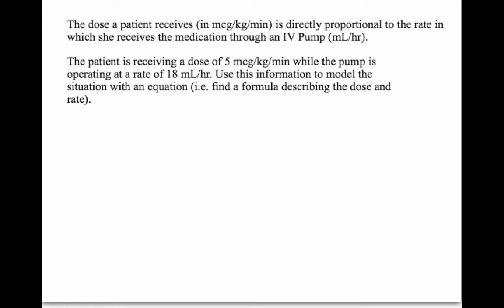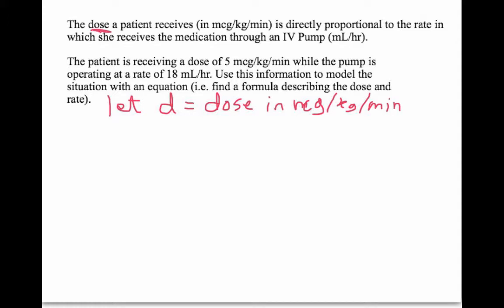Let's think about the quantities we're talking about. Let D equal the dose in micrograms per kilogram per minute. The other quantity is the rate — let R equal the rate in milliliters per hour. The dose, in micrograms per kilogram per minute, is going to relate to the rate that we set on the IV pump. In this problem, we're told that they are directly proportional.